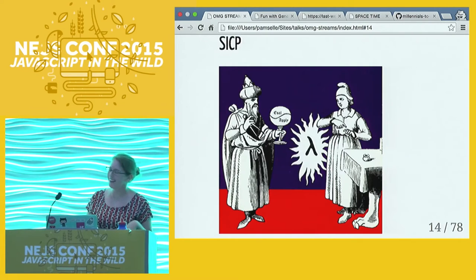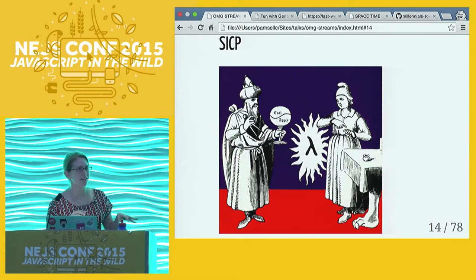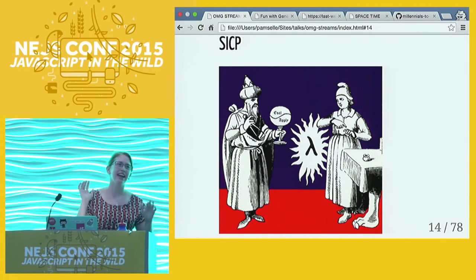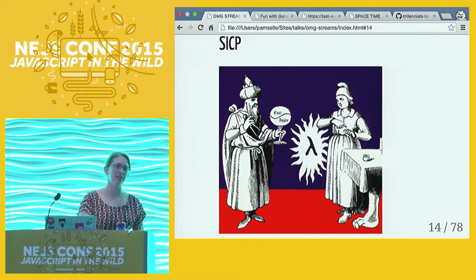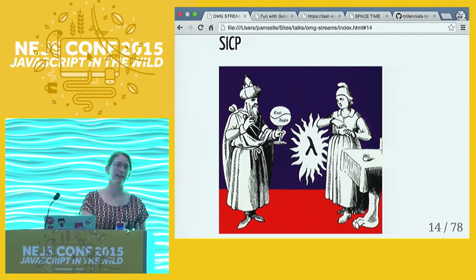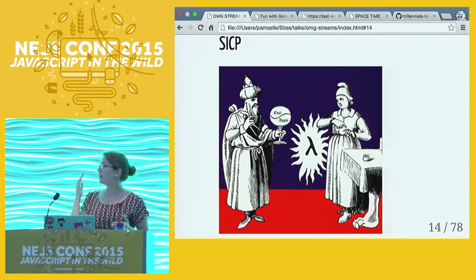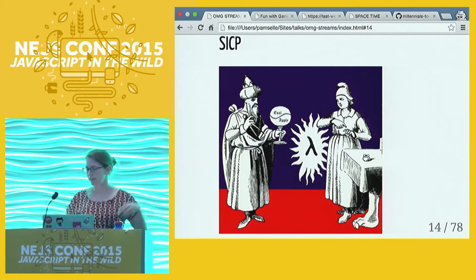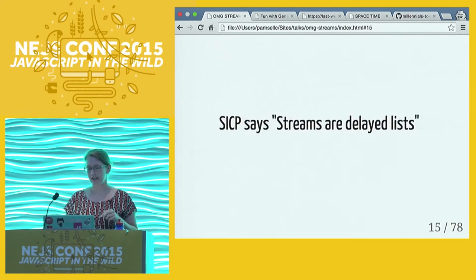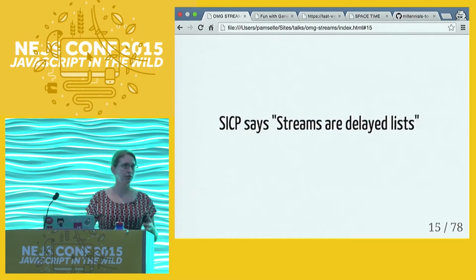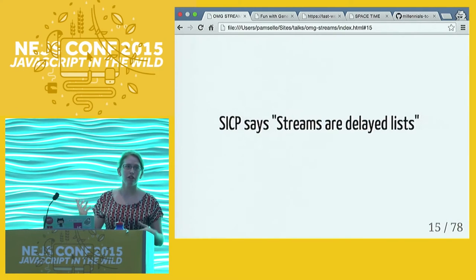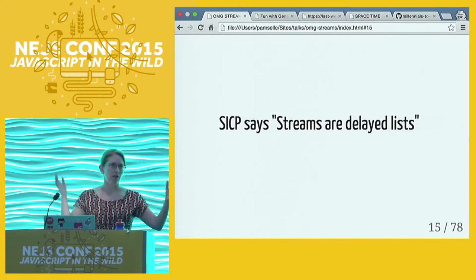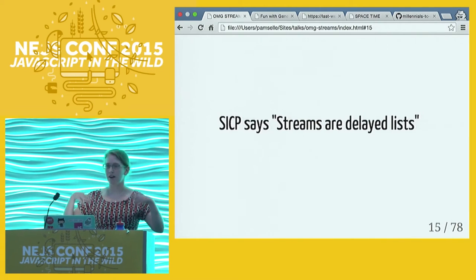SICP - the Structure and Interpretation of Computer Programs - is a book that if you have a degree in computer science you may have read, and if you haven't, you probably feel guilty about it. What SICP says, which is a great reference on computing, is that streams are delayed lists. It's like a list structure but you don't have all the values at once - you don't have them right away.